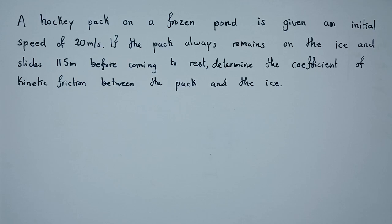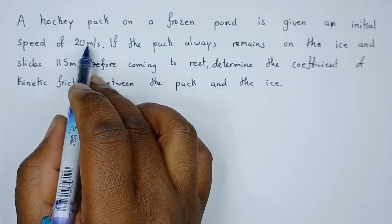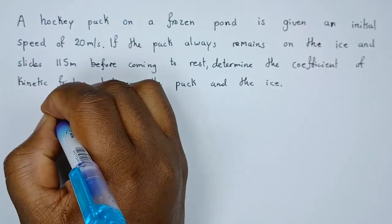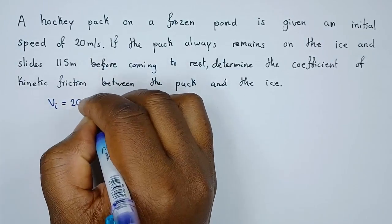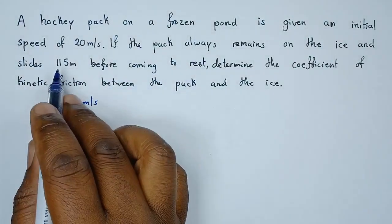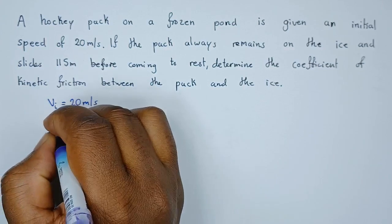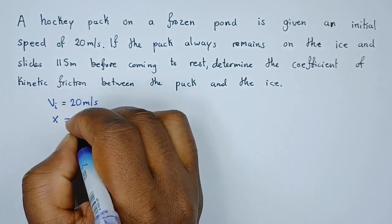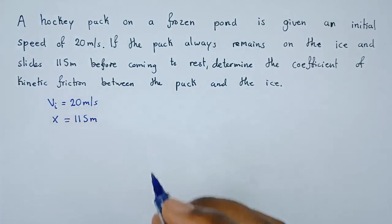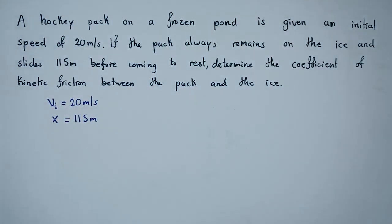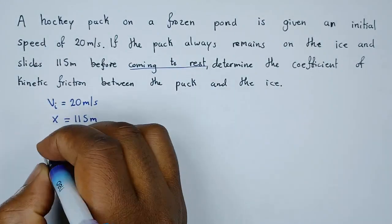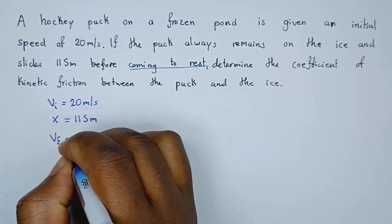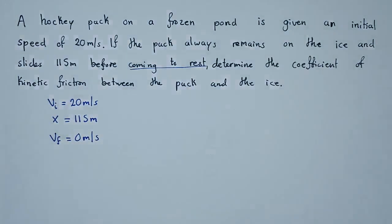So to do that, first of all let's see what we've been given. We were given an initial speed or initial velocity of 20 meters per second over a displacement of 115 meters. Then we've also been given the final velocity, since it was coming to rest, hence the final velocity will be 0 meters per second.